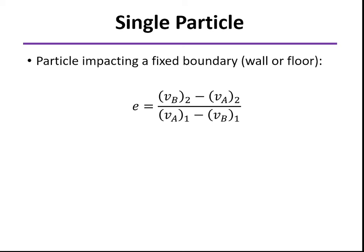Now we also sometimes look at a single particle, for example if I take a ball and bounce it off a wall or off the floor. If we look at our definition of coefficient of restitution and realize that the ball is A and the floor or wall is B, and that being fixed, I can set those equal to zero. So our coefficient of restitution just looks at the velocity of the ball before and after the collision.